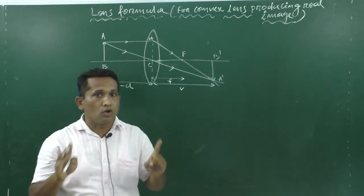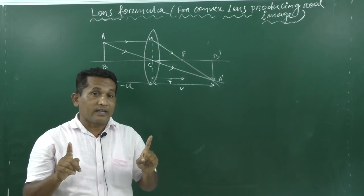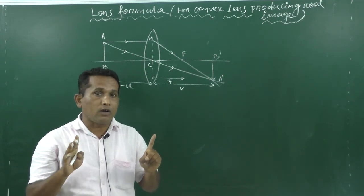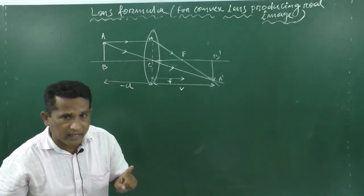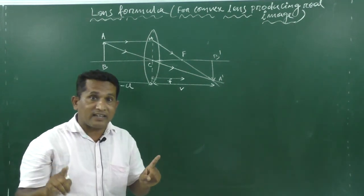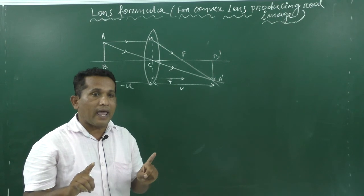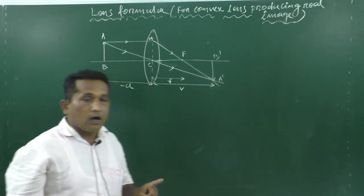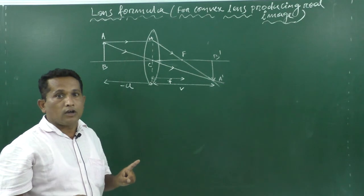A real image can be obtained when, after refraction or reflection, the reflected ray or refracted ray will actually intersect. In that case, your real image will be obtained.